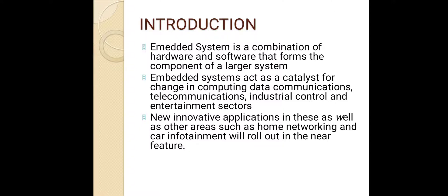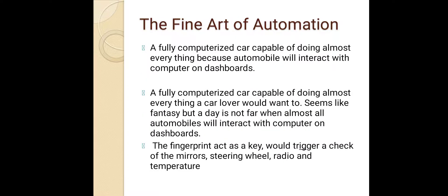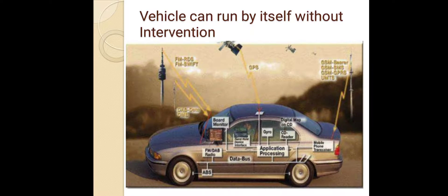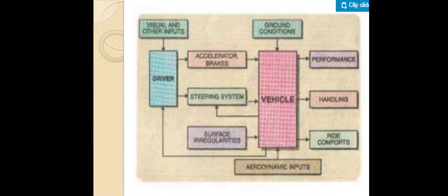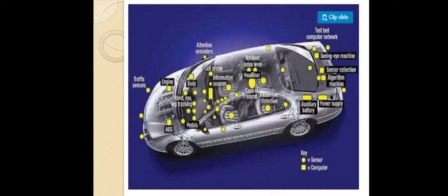Now let's understand how autonomous cars actually work. Autonomous cars rely on sensors, actuators, complex algorithms, machine learning systems, and powerful processors to execute software. They create and maintain a map of their surroundings based on a variety of sensors. Radar sensors monitor the position of nearby vehicles. Video cameras detect traffic lights, read road signals, track other vehicles, and look for pedestrians. LIDAR — Light Detection and Ranging — sensors bounce pulses of light off the car's surroundings to measure distances, detect road edges, and identify lane markings. Ultrasonic sensors detect curbs and other vehicles when parking. Sophisticated software then processes all these sensory inputs, plots a path, and sends instructions to the car's actuators which control acceleration, braking, and steering. Hard-coded rules, obstacle avoidance algorithms, predictive modeling, and object recognition help the software follow traffic rules and navigate obstacles.